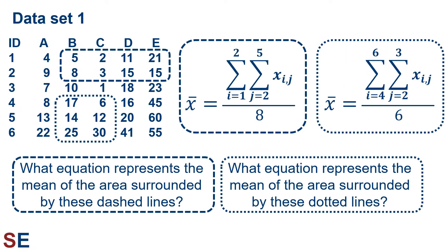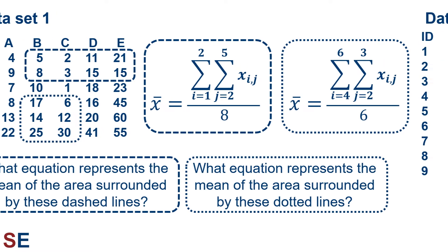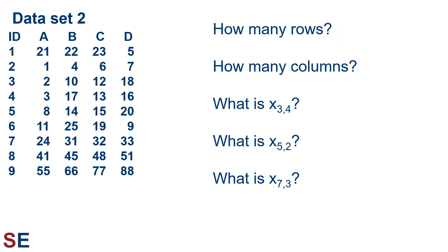This slide shows the summary of the double summations that calculate the means of each of those regions. Practice is always good, so let's do the same questions for a second data set with a different number of rows and columns. Our first five starting questions: How many rows? How many columns? What's the value of x₃₄? What's the value of x₅₂? What's the value of x₇₃?